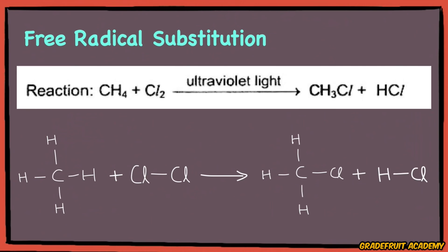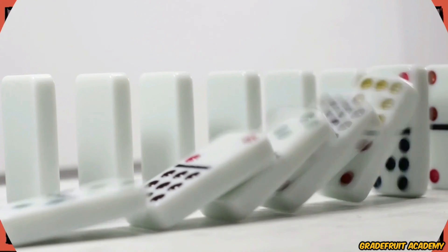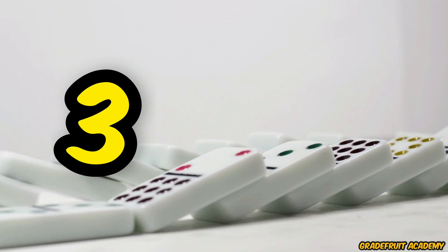While it may look like a simple one-liner reaction, free radical substitution actually involves a chain reaction consisting of three main steps.